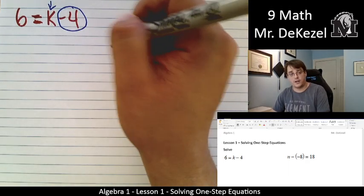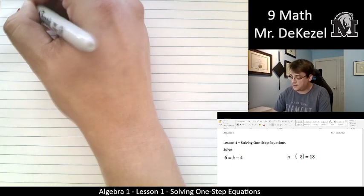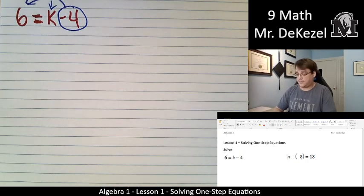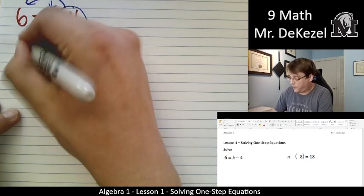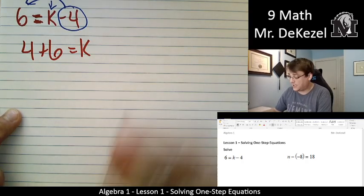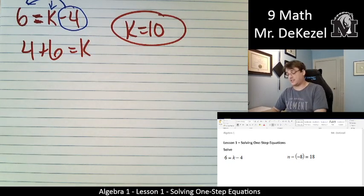It's a negative 4. It is subtracted from this side. So when I move it across the equal sign, I'm going to change its sign. It is going to become positive 4. I am left, then, with 4 plus 6 equals k, and that means k is equal to 10. If you knew that already, that's great.